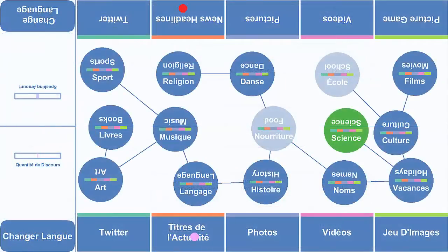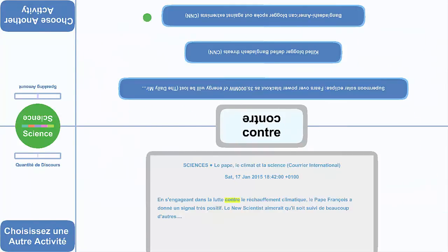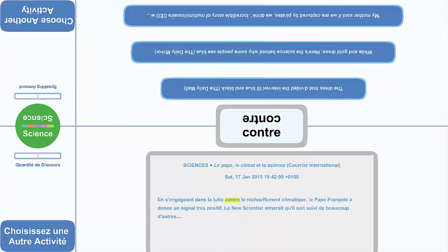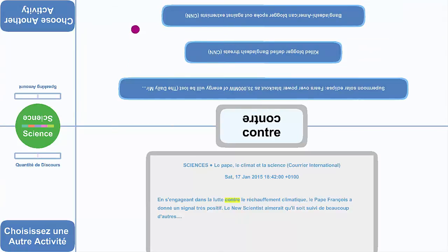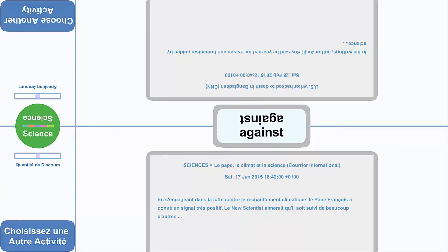For the news headlines activity, we utilize a news feed aggregator to download and display news headlines that relate to the currently selected topic. Learners can discuss these headlines or select them to display the entire news article. As with the Twitter activity, words can be selected for discussion as well as translated.